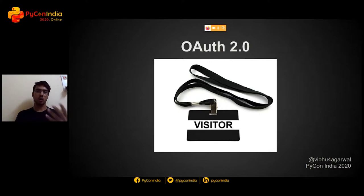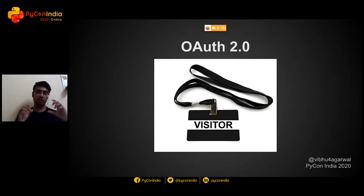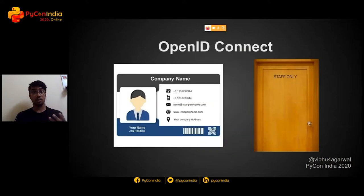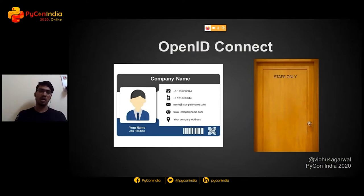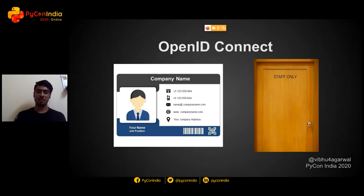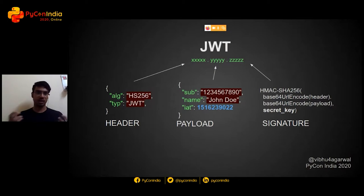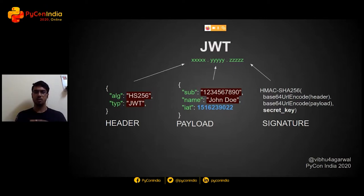For comparison, OAuth provides an access token — basically a visitor badge. You go into the building, show your badge, you're allowed in, you roam around, but people don't know anything about you. In contrast, OpenID Connect gives you an ID token, similar to an employee card. The employee card has user information like mobile number and designation. Using the employee card, you can not only roam around the building but also get through staff-only doors. The ID token is in JWT format — it has a header, a payload with claims and user profile info, and a signature that validates whether the JWT has been tampered with or expired.